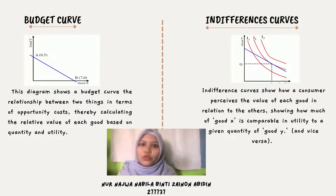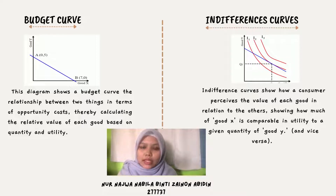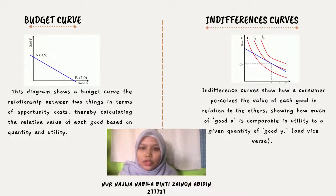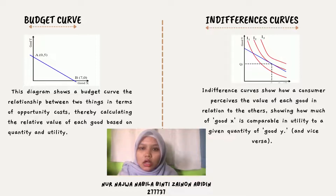In the theory of consumer, there are two types of curves: the budget curve and the indifference curve. The budget curve shows the relationship between two goods in terms of opportunity cost, calculating the relative value of each good based on quantity and utility. The indifference curve shows how a consumer perceives the value of each good in relation to the other — how much of good X is comparable in utility to a given quantity of good Y, and vice versa.